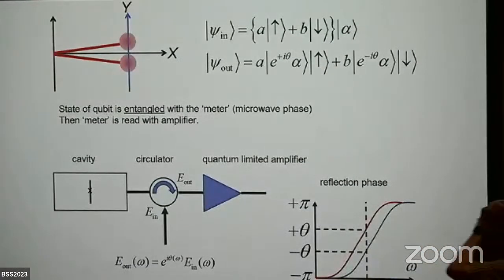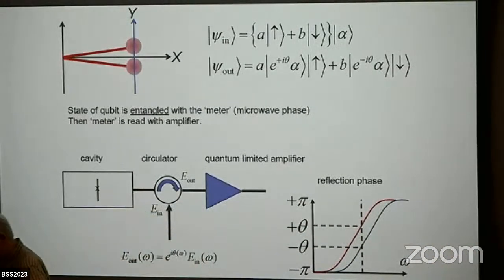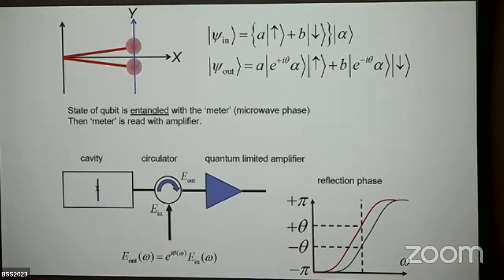When you learn about measurements, you're taught about Bohr and some active measurement where everything collapses. But real measurements don't work that way. You never measure the qubit itself — it's a tiny thing. You entangle the state of the qubit with some macroscopic meter — in this case, a wave with lots and lots of photons that you then measure. When you measure this phase, you say 'I got this result, so the qubit must be that state.' That's how all real measurements work.